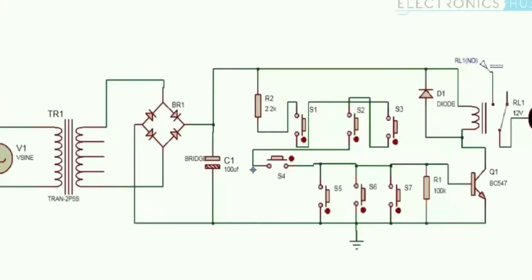You can see the circuit connection. It is made up of simple connections. In this we use the transformer, switches, diodes, etc. This is a transformer 230 volt to 12 volt. It is a rectifier which converts AC to DC.